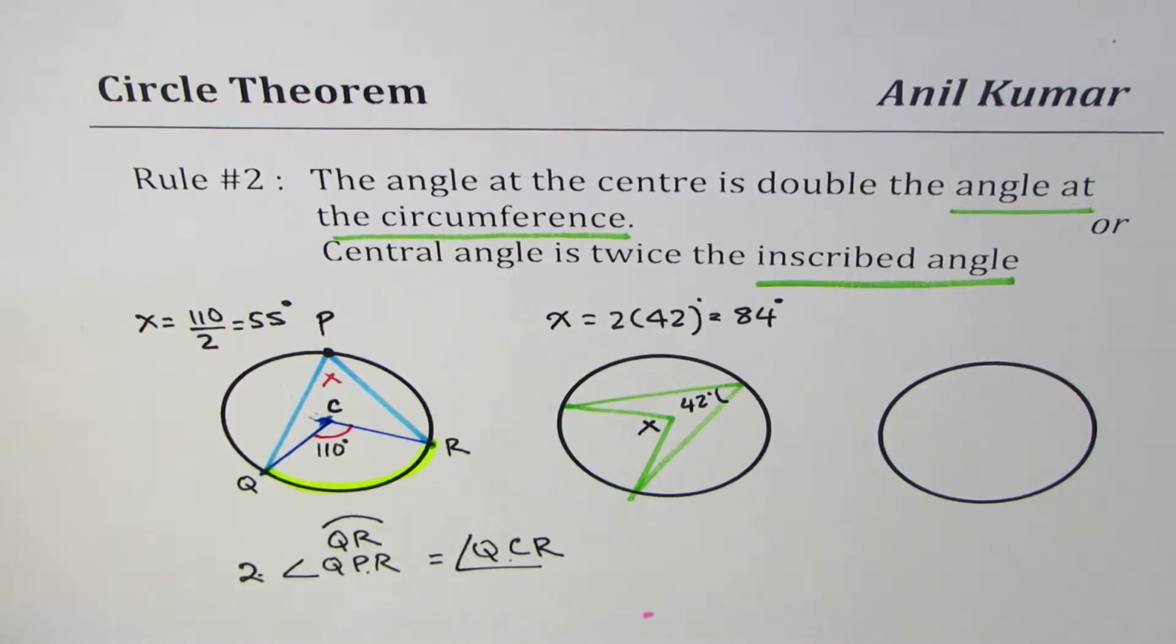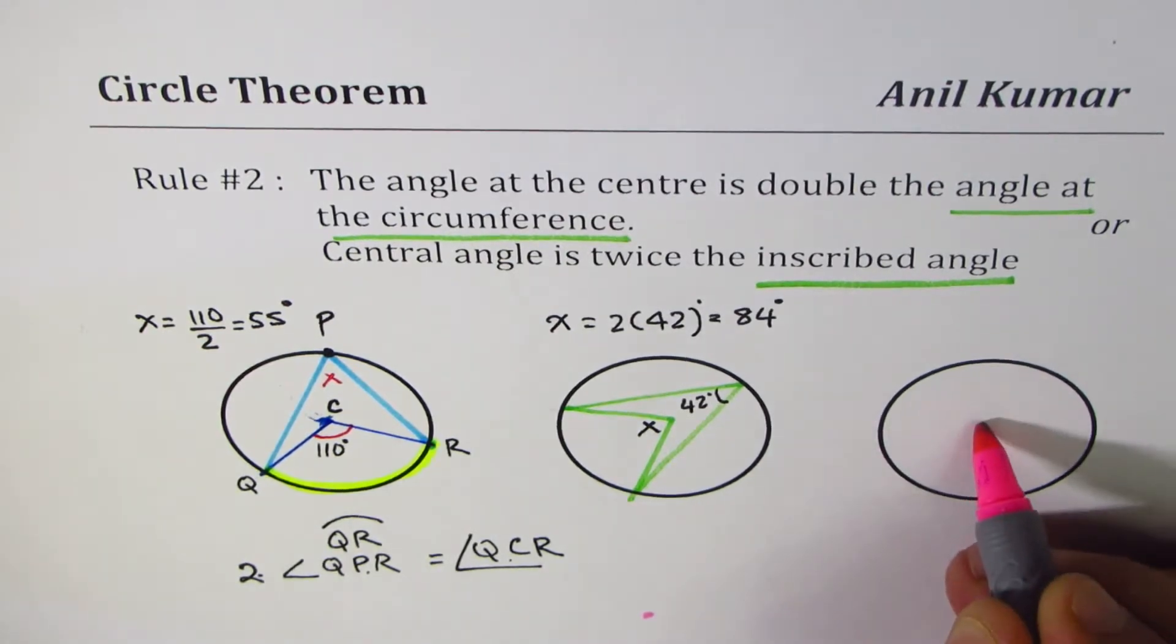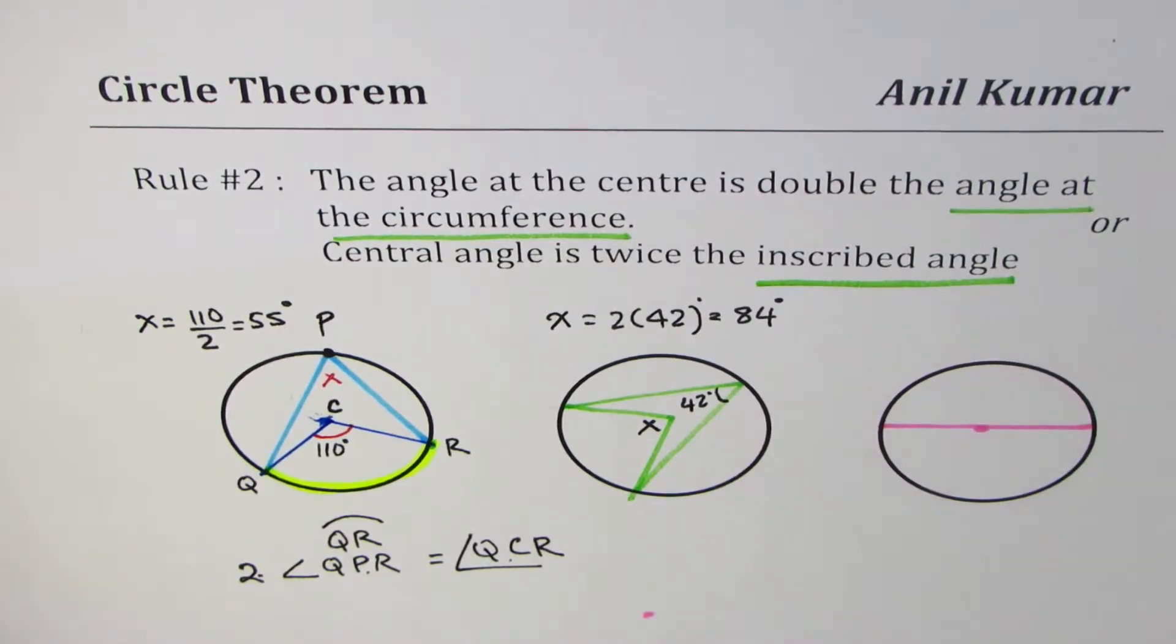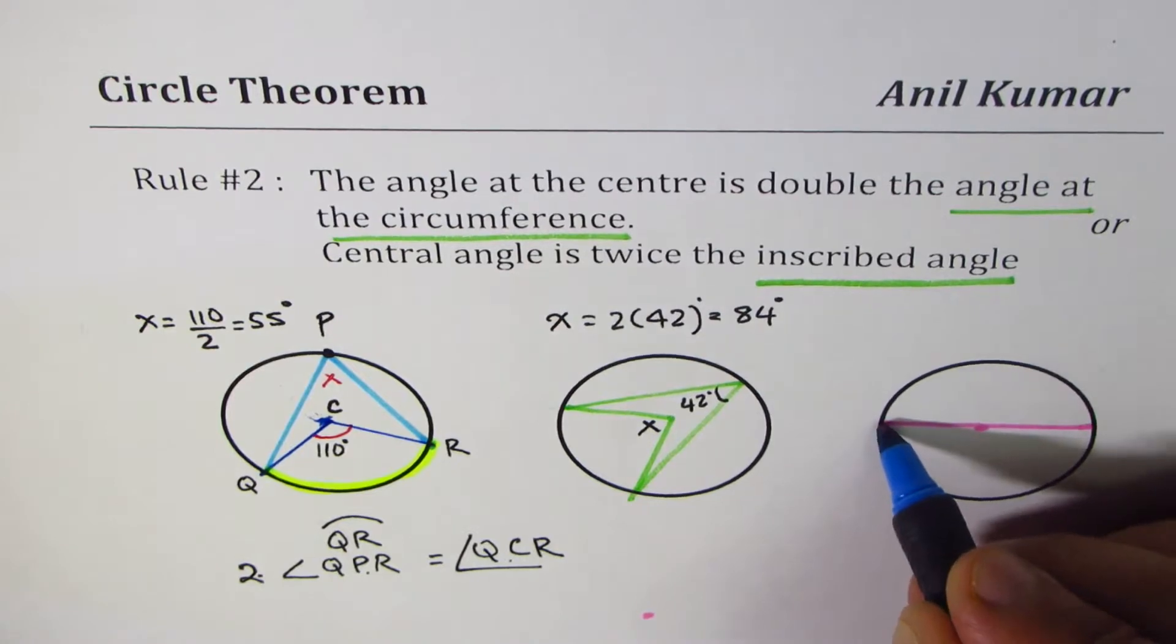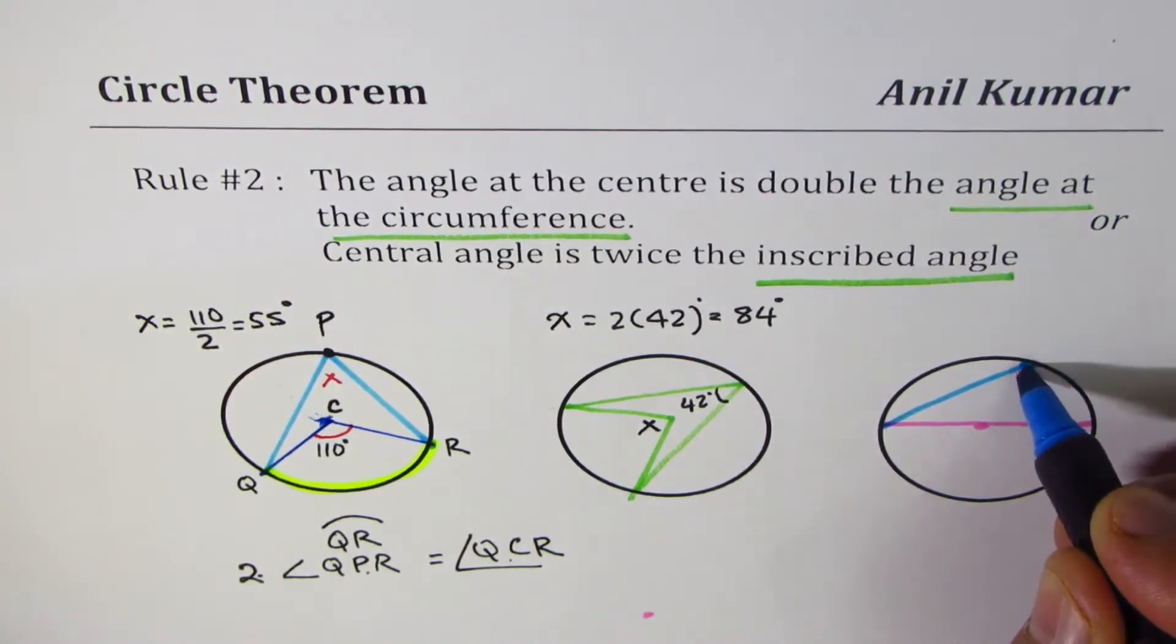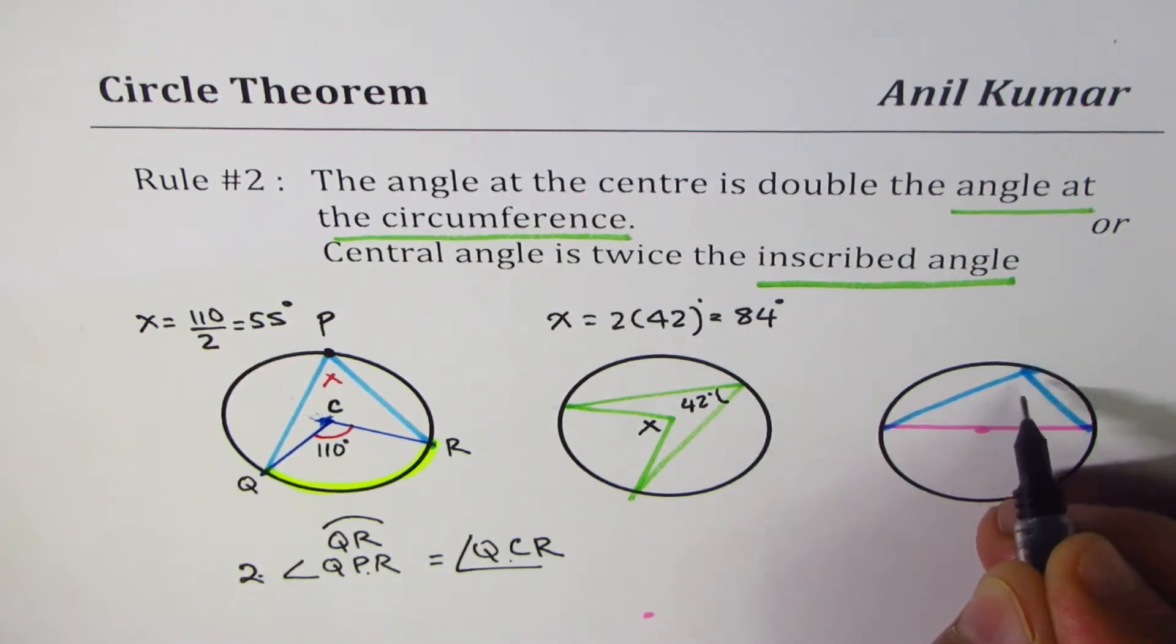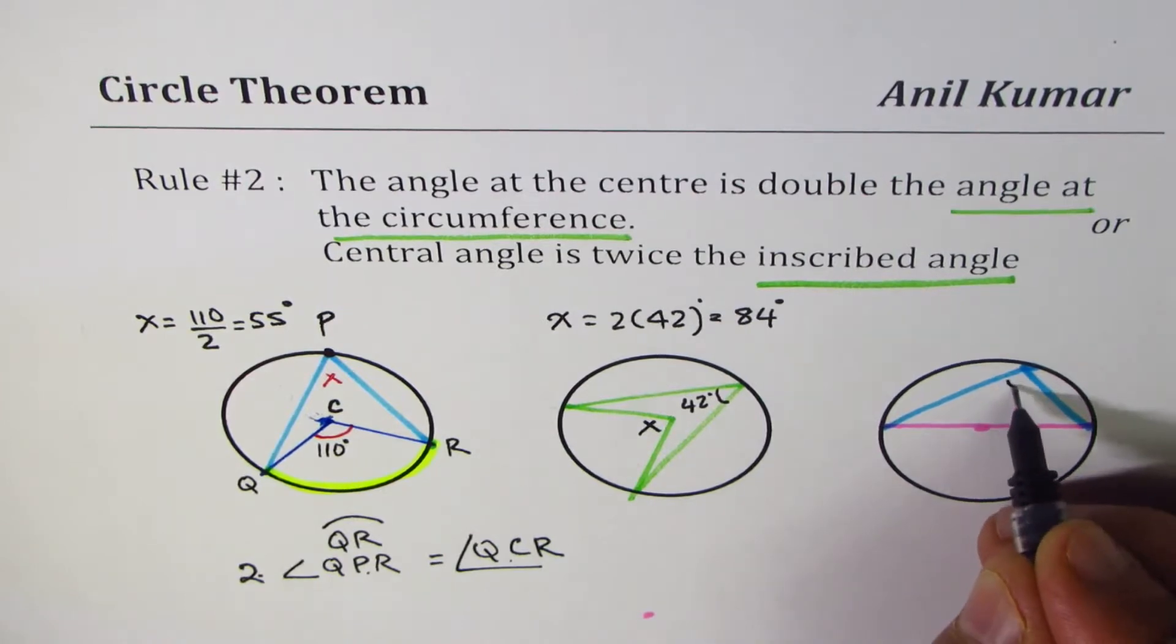Now, let me take a very special case, and let's say that we are talking about a diameter, and we take a point on the circumference. Let's say that's the point which we have taken. Now, you have to tell me, this time, what is the angle Y?